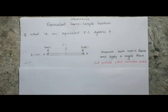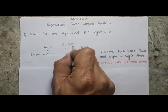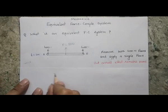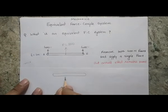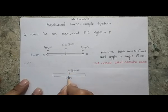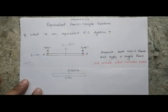The resultant force will be equal to the summation of these two forces, so the resultant force will be 800 Newton. That means if I have a bar of length 3 meters and apply a force of 800 Newton at the center, the bar is going to behave similarly as when I apply those two forces.